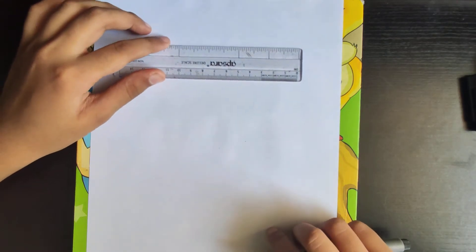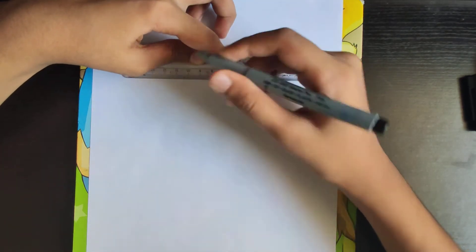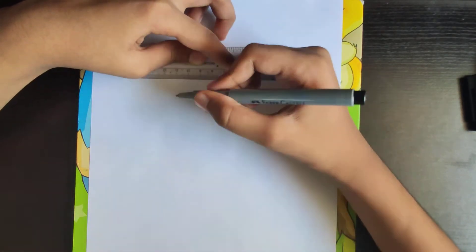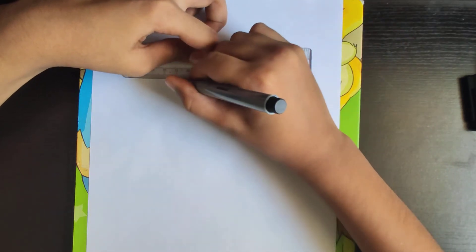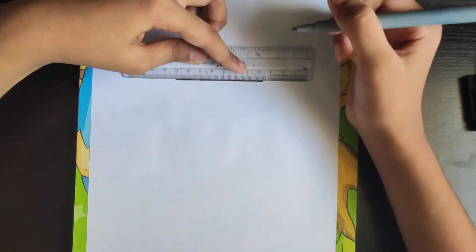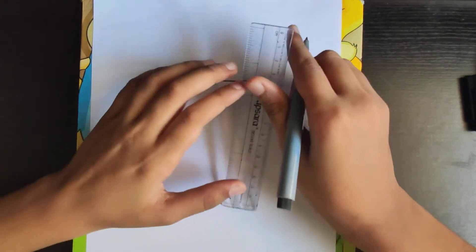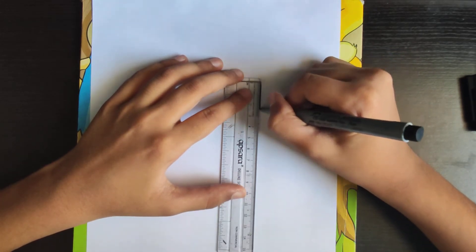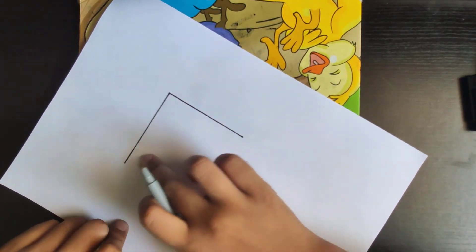Take your scale and make a straight line. Place your scale and make another line. The length of the two lines should be equal.